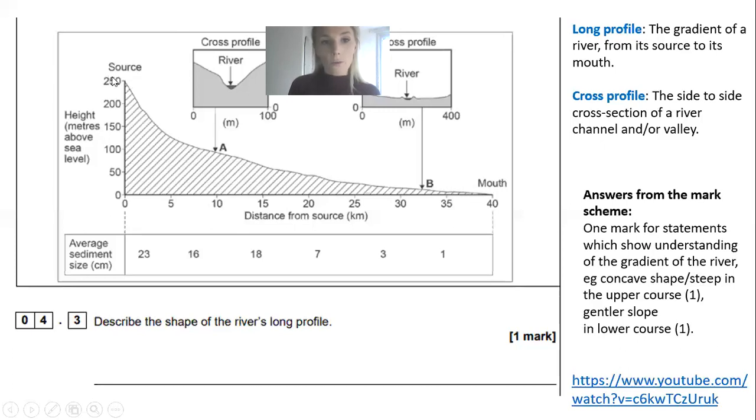The question asks you to describe the shape of the river's long profile—how does the shape change as you go from source to mouth? You would have achieved one mark if you said the shape is concave, meaning it goes inwards. You could have written that it's very steep in the upper course—just between zero and five kilometers from source the height has dropped by over 100 meters, which is significant. Whereas for that same change in height it takes around 35 kilometers from source. It's really steep in the upper course and then it becomes more gently sloping towards the lower course.